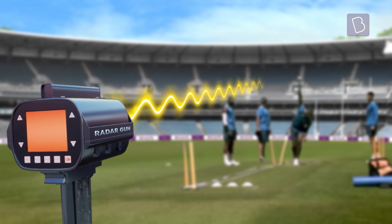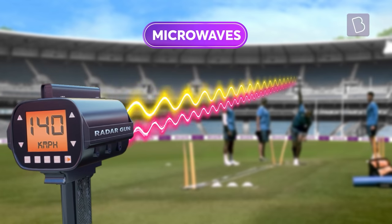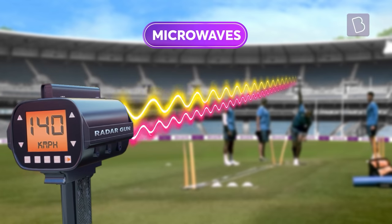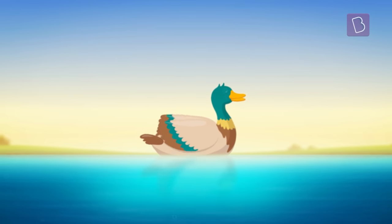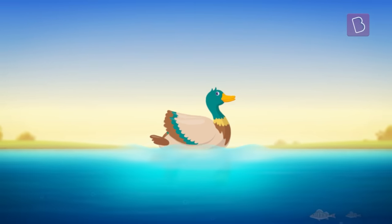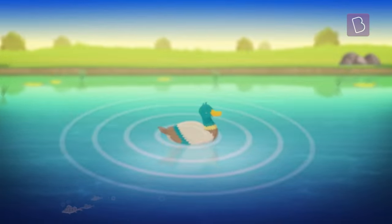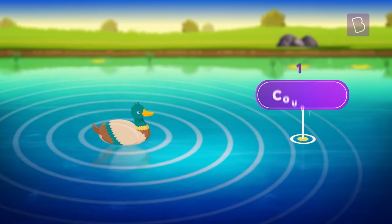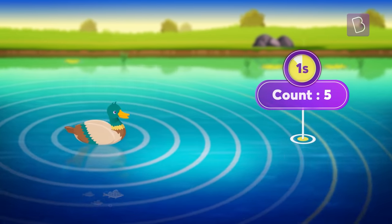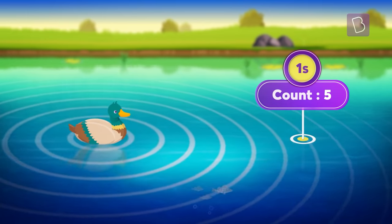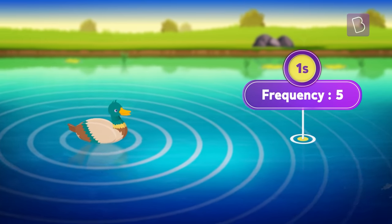A radar gun can emit and receive invisible waves known as microwaves. To understand the behavior of these waves, let's observe a duck on a pond. The flapping creates a disturbance that travels along the water in the form of waves. Notice that in a second, there are a certain number of waves that pass by a fixed point — this is what we call the frequency of a wave.